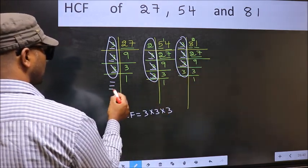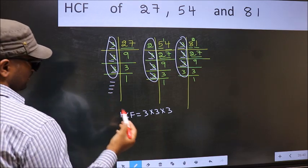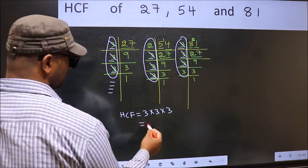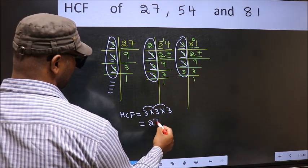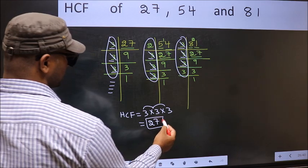No more numbers have been left out. So our HCF is 3 into 3, 9 into 3, 27. 27 is our HCF.